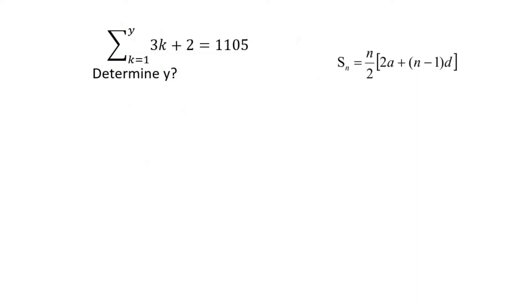A good thing to do with sigma notation questions is to find the first three terms. So for example, term 1, you would start off by plugging in this number. So it'll be 3 times 1 plus 2, which is 5.